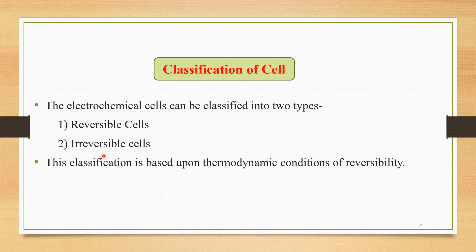One is a reversible, second is irreversible cells. This classification is based upon thermodynamic conditions of reversibility. So we have to take into consideration the thermodynamic conditions of reversibility, and depending upon that, these cells are classified into these two important classes.